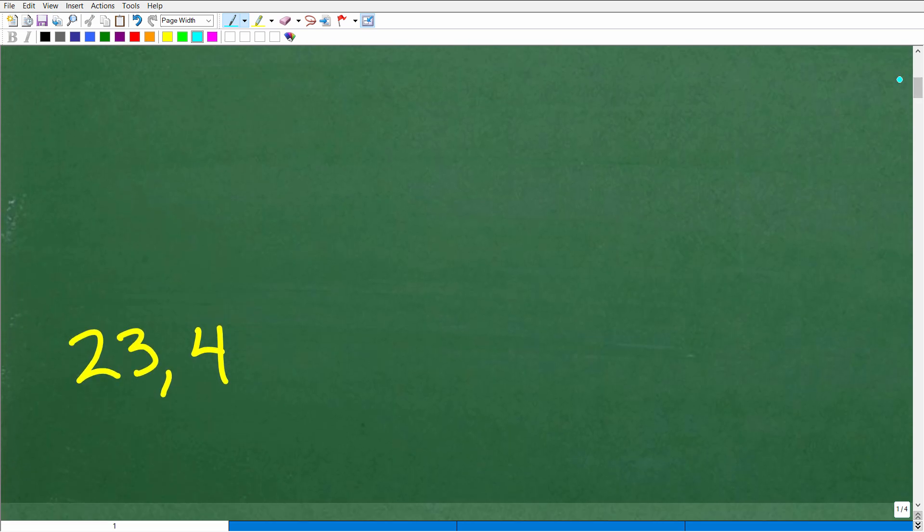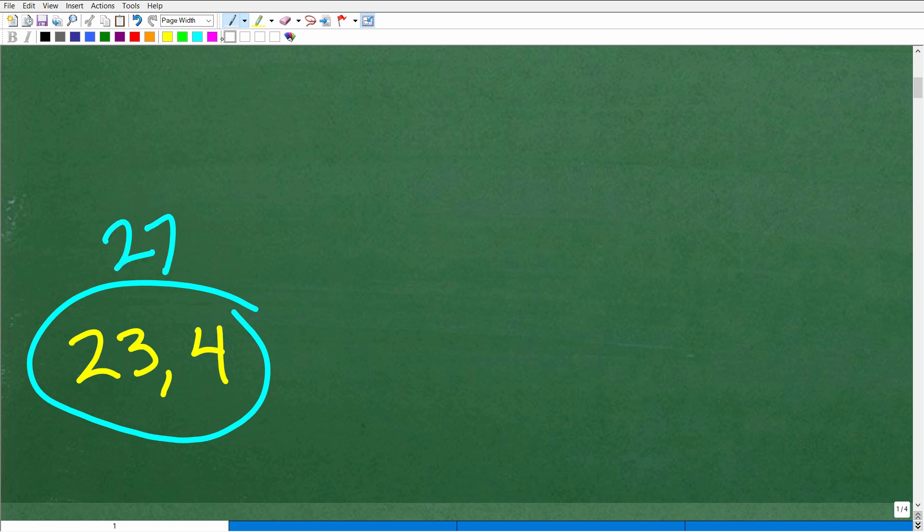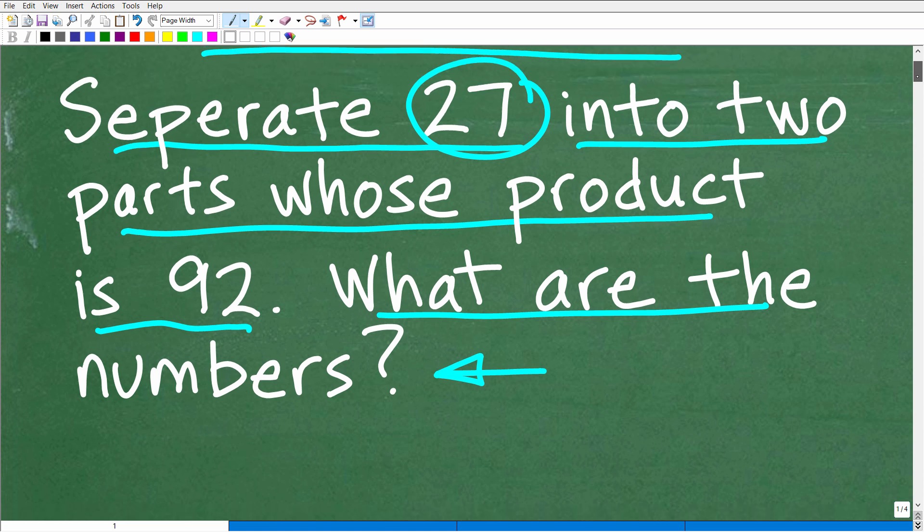The numbers are 23 and 4. Now, obviously, if we add 23 and 4, we get back to 27. So that's what we're talking about, at least if you're a bit confused on what the problem was stating.